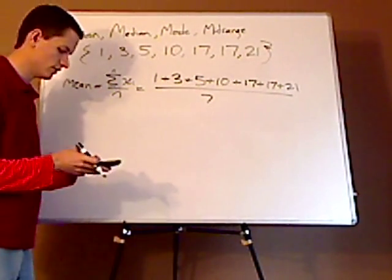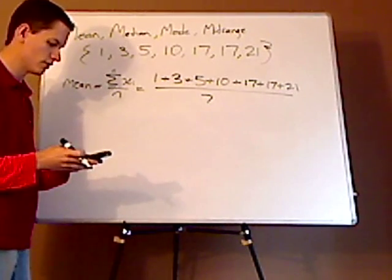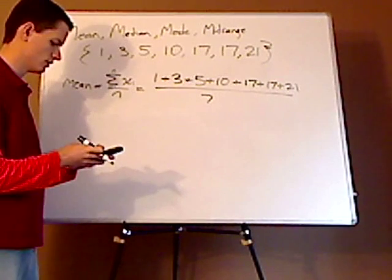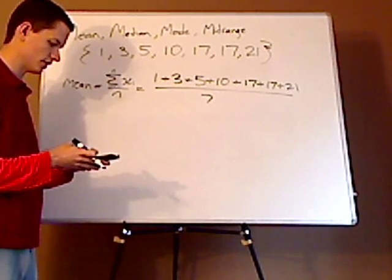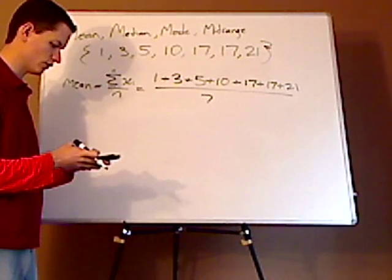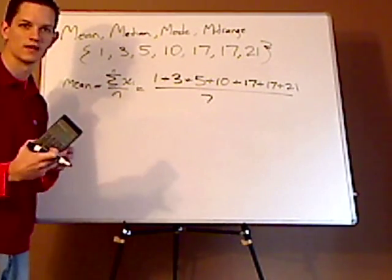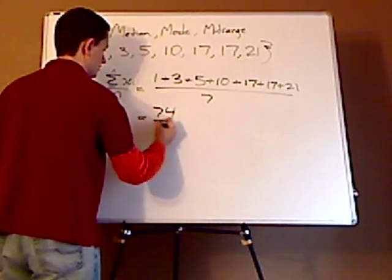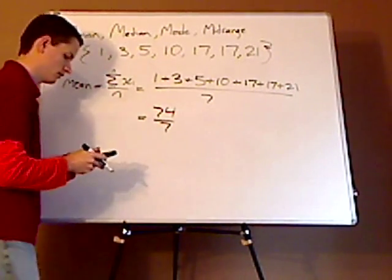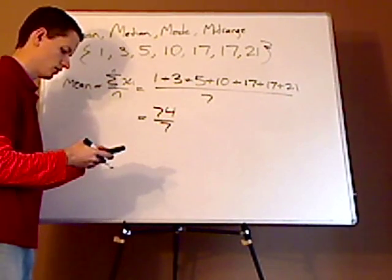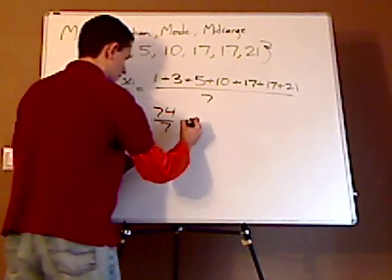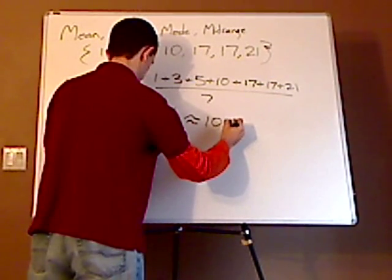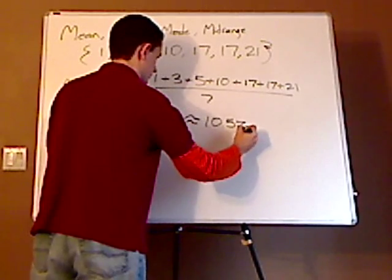So you plug in your calculator, do 1, plus 3, plus 5, plus 10, plus 17, plus another 17, plus 21, you should get 74. And so that's 74 divided by 7. And you should have gotten approximately 10.571.